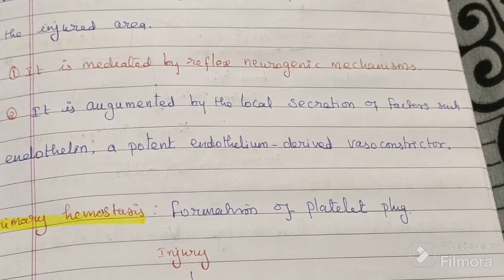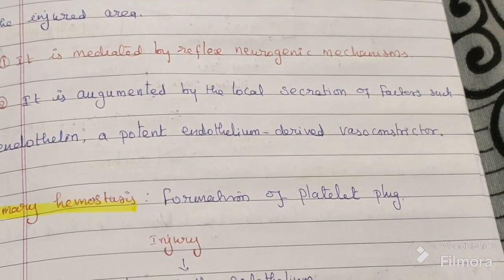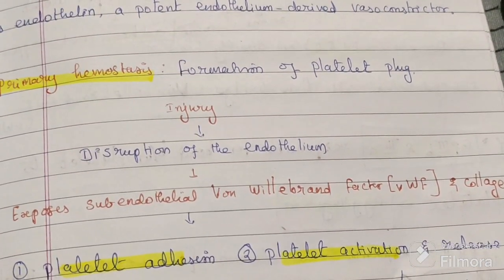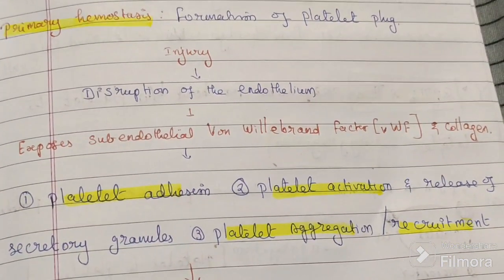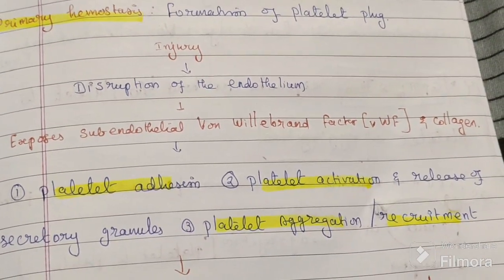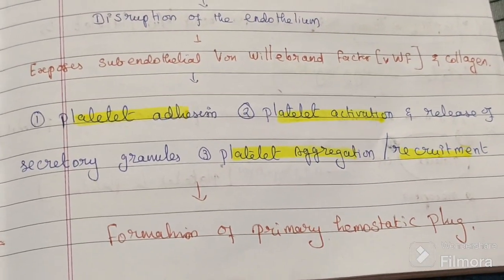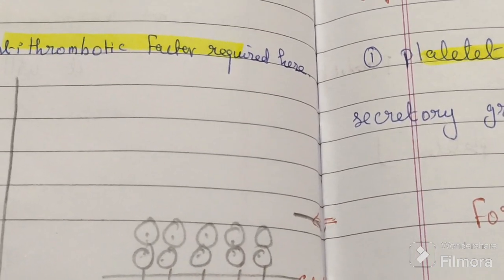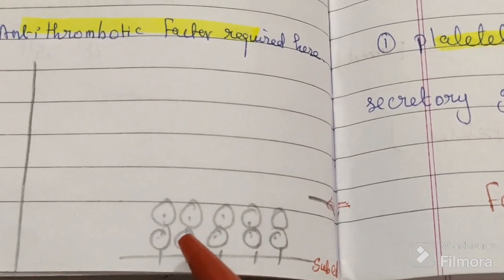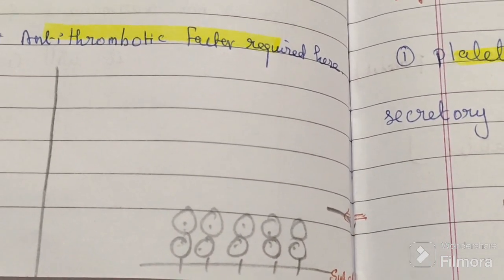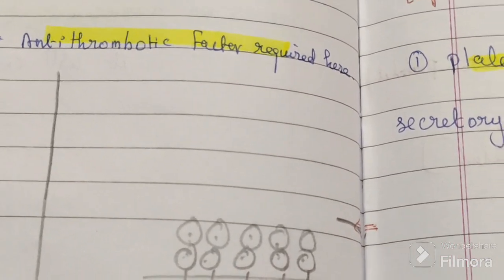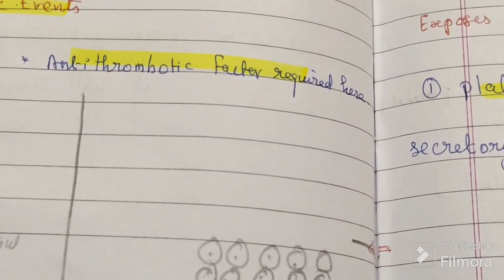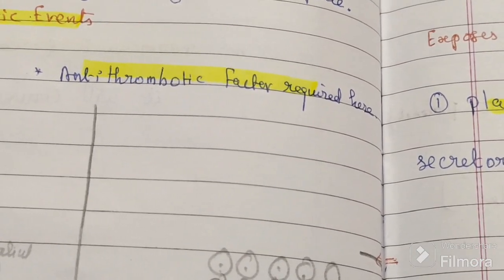The second event is primary hemostasis — the formation of the platelet plug. There are three steps involved: platelet adhesion, platelet activation, and platelet aggregation. The wall of the blood vessels has an endothelial lining. At the injured area, platelets come and bind to the sub-endothelial cells. This process is called adhesion. Inside each platelet are granules which are released to activate other platelets; this is called activation.